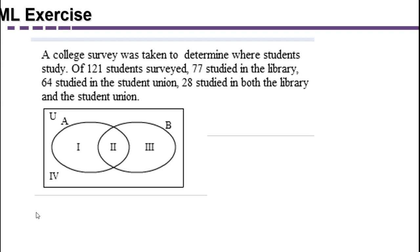What are the characteristics that we're analyzing? We're analyzing where they study, which could be the library or the student union. So we're going to let set A represent students that studied in the library, and we're going to let set B represent students that studied in the student union. And now we're going to look at the facts that we know about each.